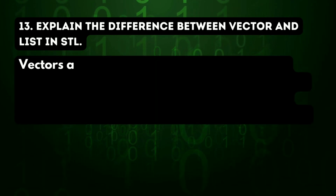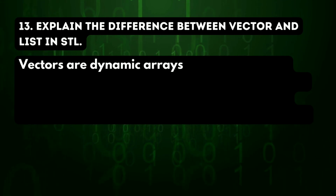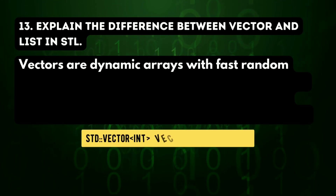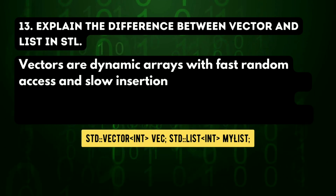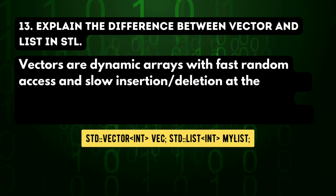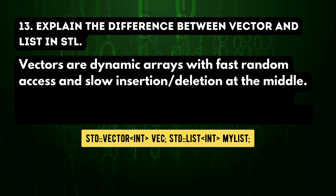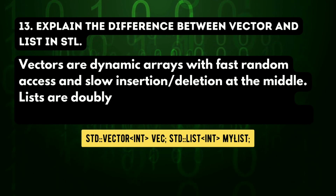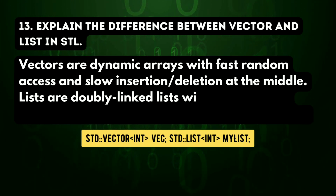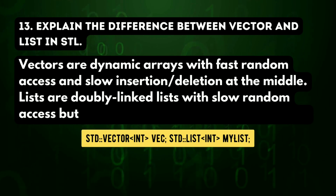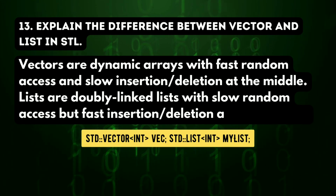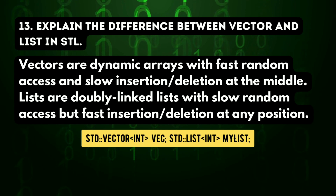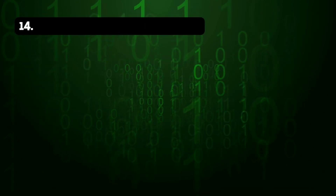13th question: explain the difference between vector and list in STL. Vectors are dynamic arrays with fast random access and slow insertion/deletion at the middle. Lists are doubly linked lists with slow random access but fast insertion/deletion at any position.